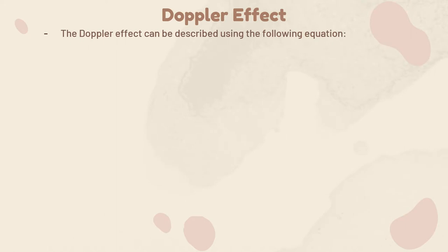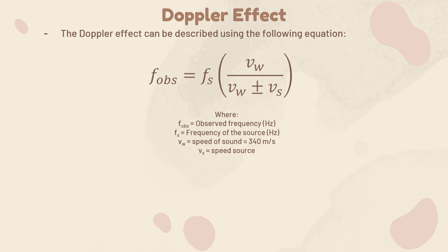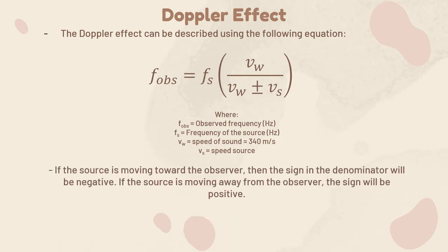The equation for the Doppler effect is: F_obs = F_s × (v_w / (v_w ± v_s)), where F_obs is the observed frequency, F_s is the source frequency, v_w is the speed of sound (approximately 340 m/s), and v_s is the speed of the source. If the source is moving towards the observer, use a negative sign in the denominator; if moving away, use a positive sign.